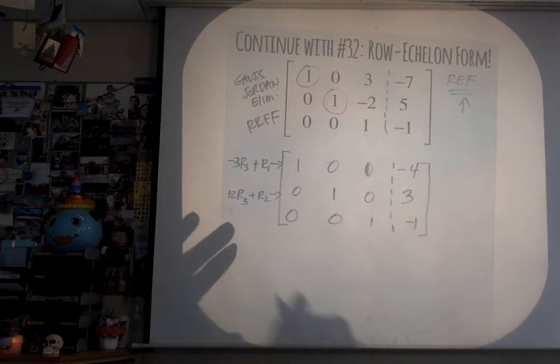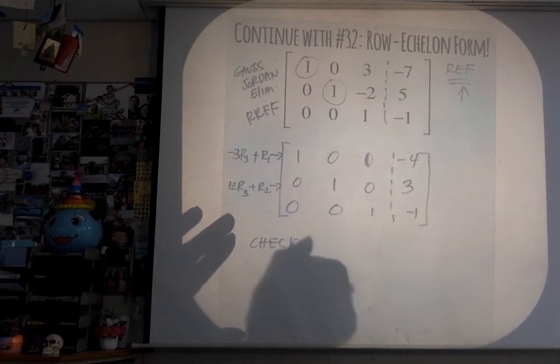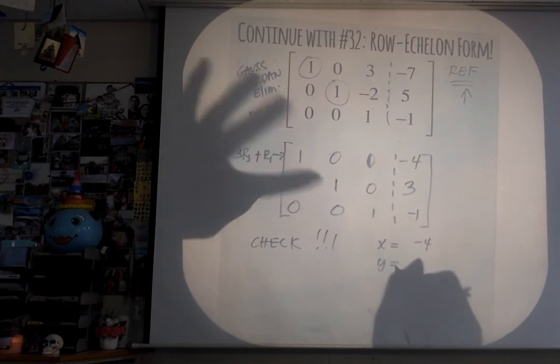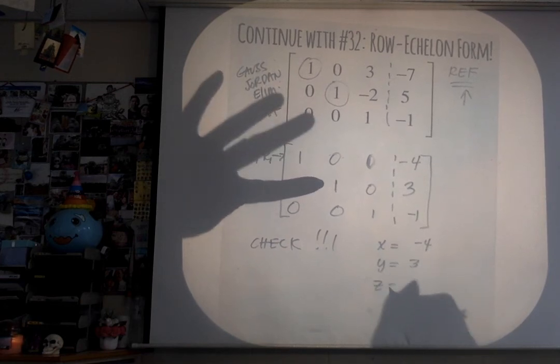Oh my gosh, check it. Check your solutions guys. Oh my gosh, look at this. This means x equals negative 4, y equals 3, z equals negative 1. So our solution is negative 4, 3, negative 1.